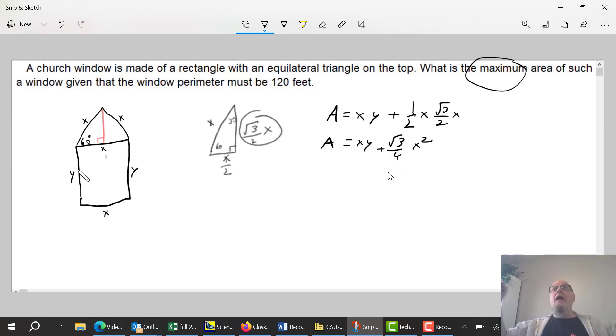Now it's in terms of two variables, X and Y. What stops me from making a massive window? Well, the perimeter has to be 120 feet. So this Y plus this X plus this X plus this Y plus this X has to equal 120 feet. So 120 equals 2Y plus 3 X's. That's our linking function.